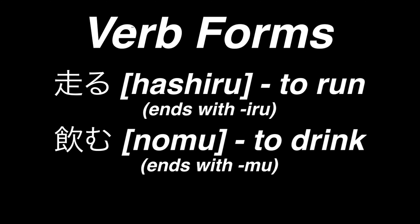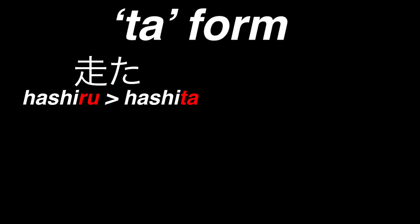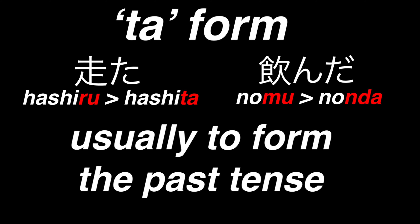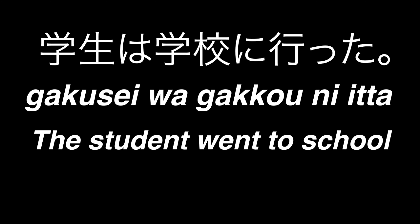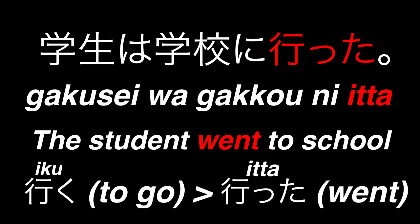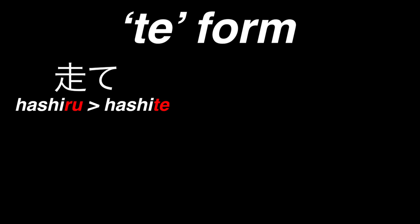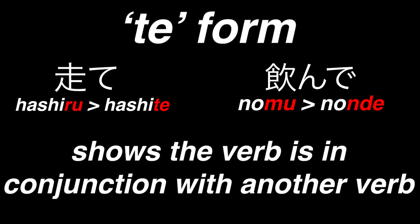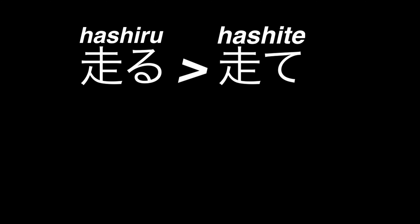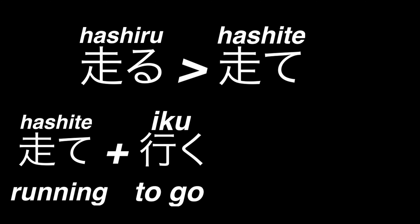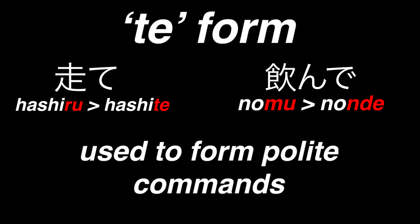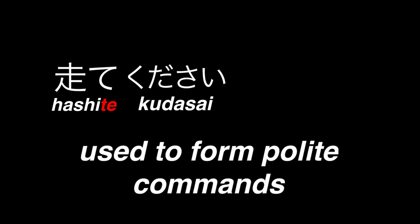These verbs conjugate these forms differently. The ta form — which is hashita for to run, and nonda for to drink — is mostly used to form the past tense. For example, gakusei wa gakkou ni itta means the student went to school. Notice itta is the ta form of the verb iku, to go. The te form, hashite and nonde, usually shows that the verb is in conjunction with another verb. For example, hashite can be attached to a verb like iku to get hashiteiku, to keep running. It's also used in forming polite commands with the word kudasai, like hashitekudasai, meaning please run.